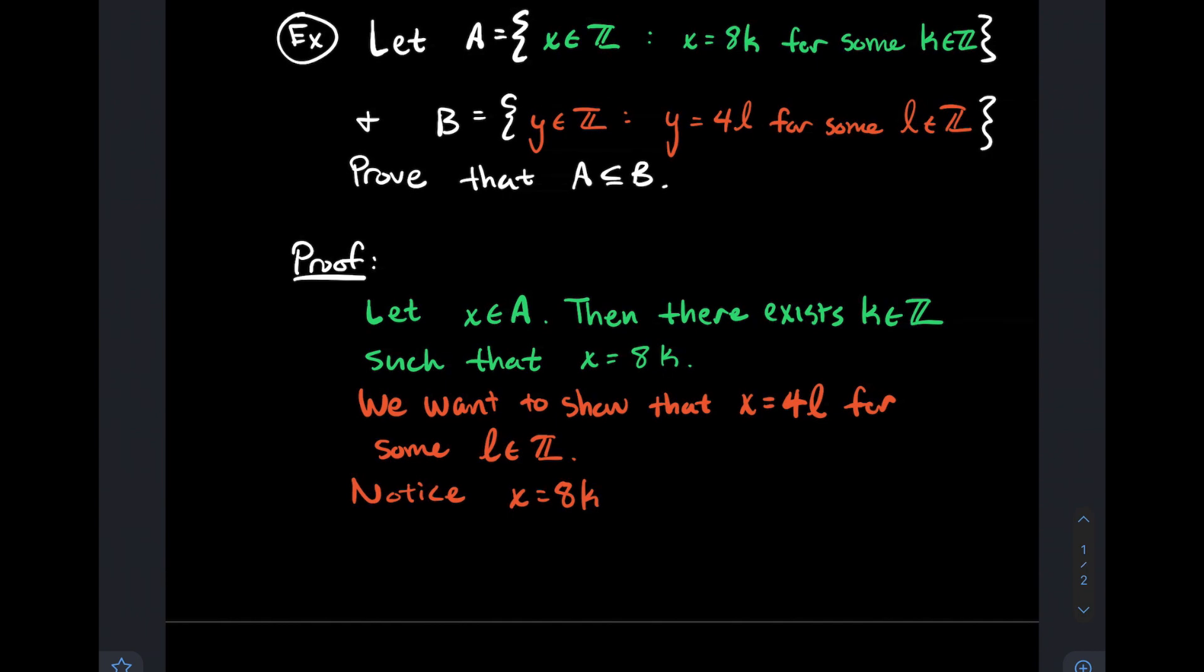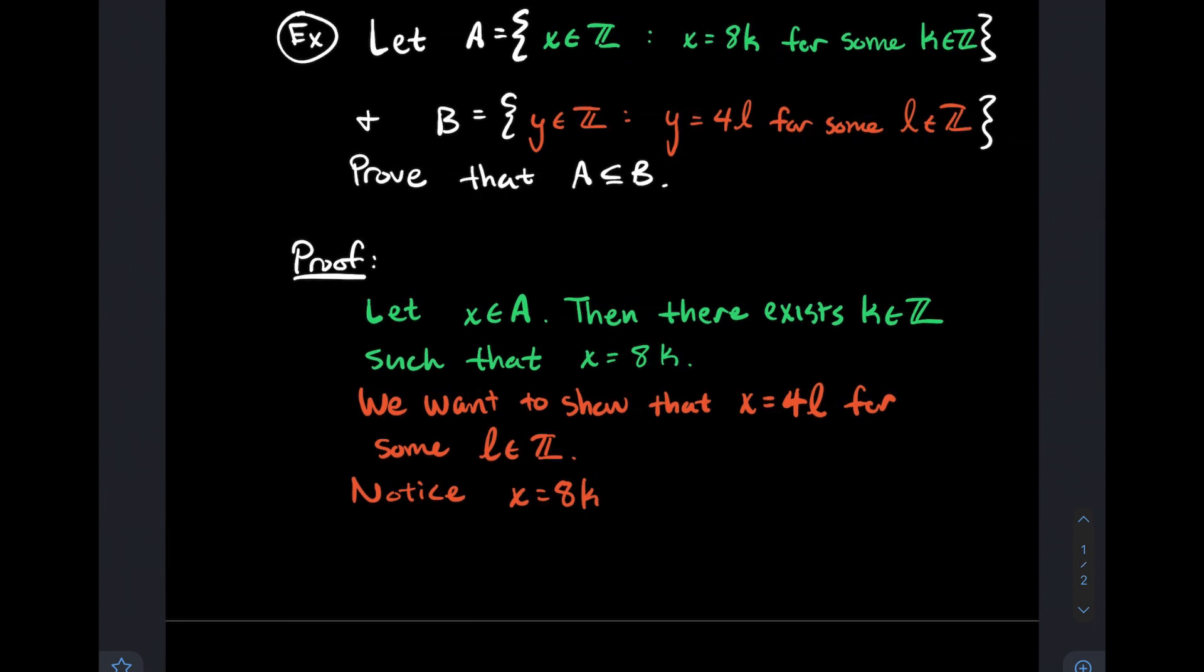I've got this expression, 8k—that's what X is. I just want to try to make a four show up somehow. I'll factor eight as four times two, then use the associative property to regroup. So I could rewrite X as four times 2k. What you notice is 2k there in parentheses—that's an integer.